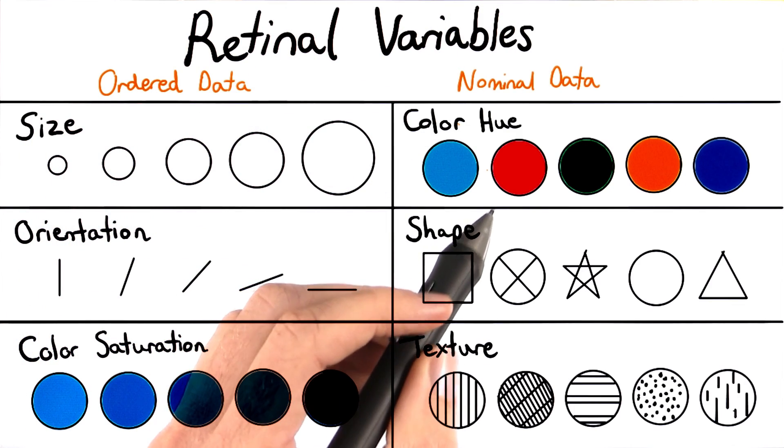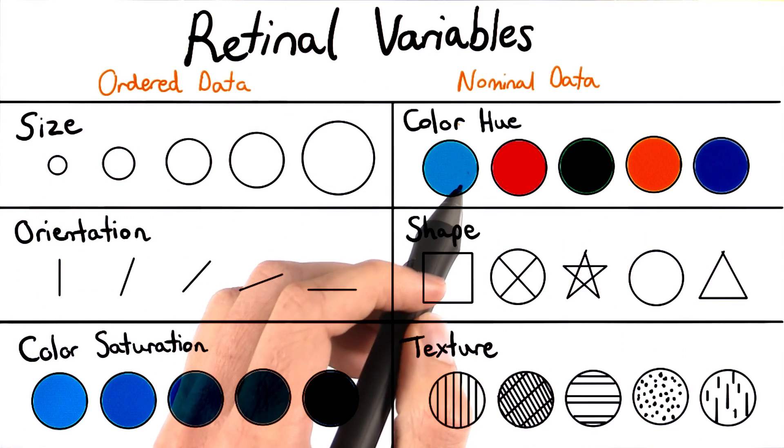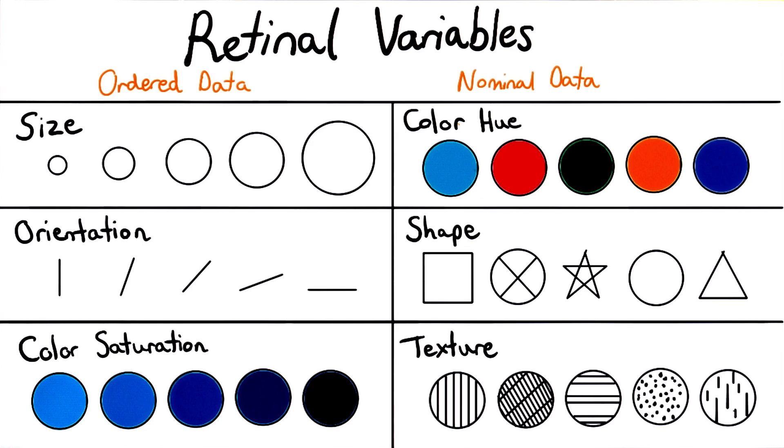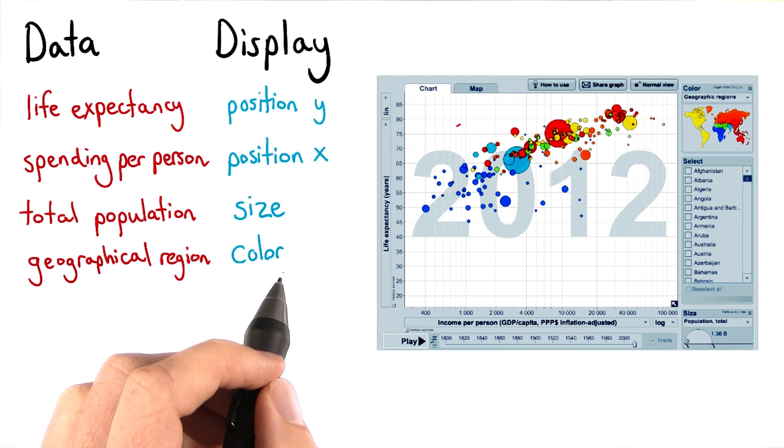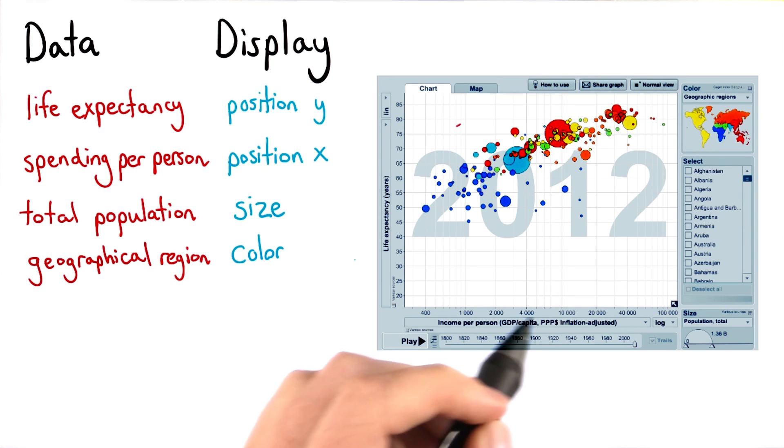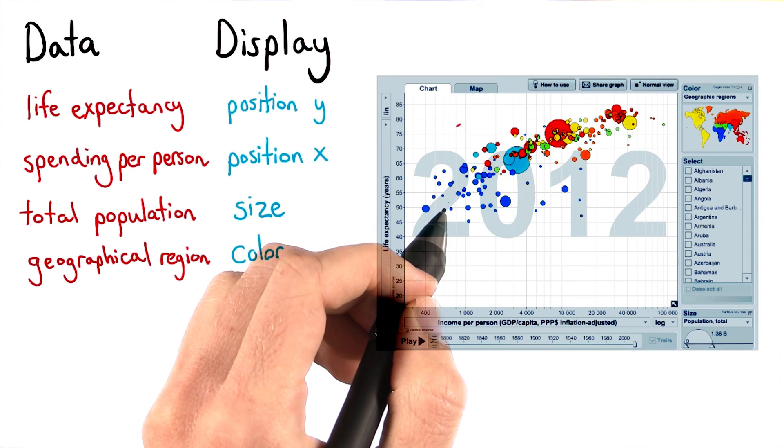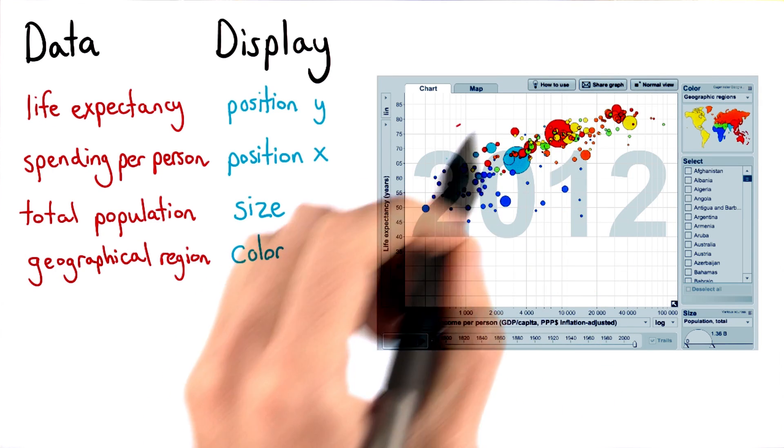For our gap minder visualization, we can see that color hue encodes the geographical regions of the world. This choice of color makes it easier to compare income and life expectancy across developed and less developed countries of the world.